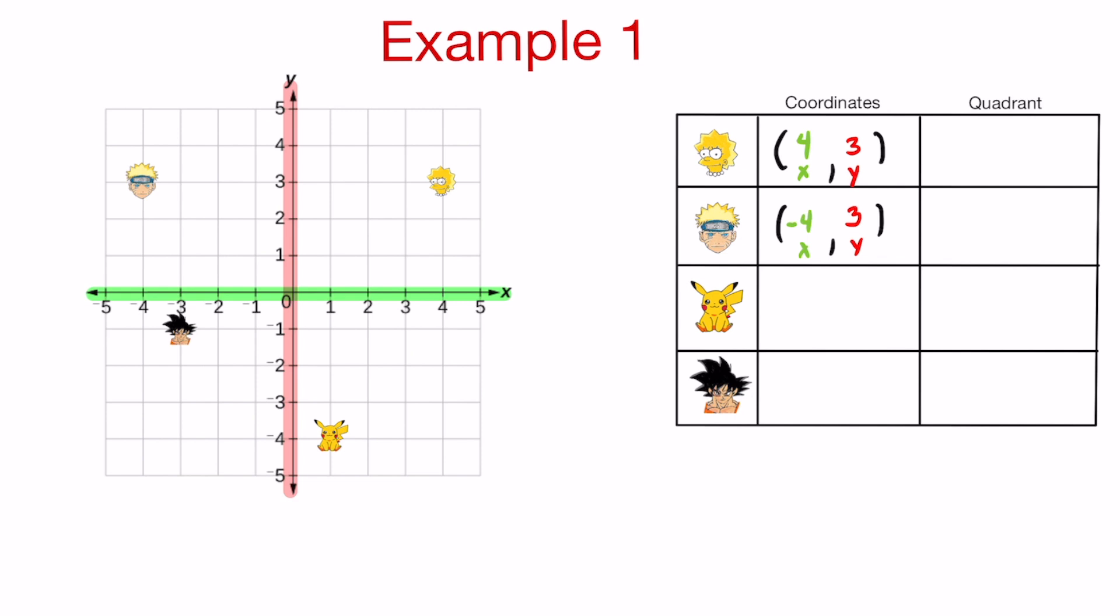Let's go to Pikachu next. Pikachu is this Pokemon right here. Used to watch that all the time. If you're getting mixed around, just think about it this way. X comes before y in the alphabet. So you got to look at the x number first, which is right on this x-axis. And if you look up, that is one. That is the number that you're going to put right here. And if you look on the y-axis, make sure you look that that's a negative number. That is negative four.